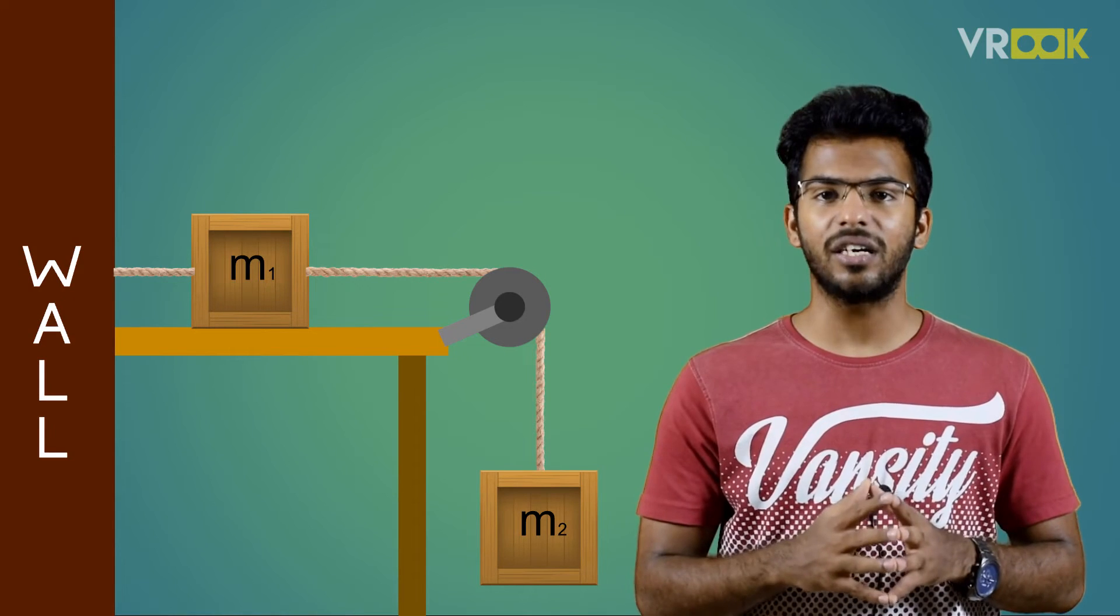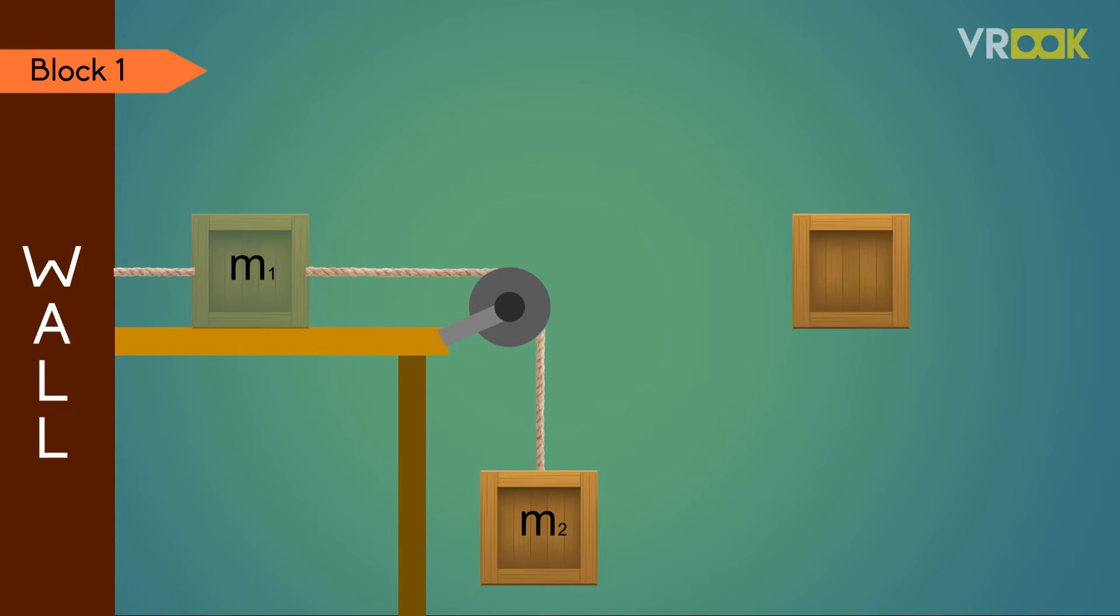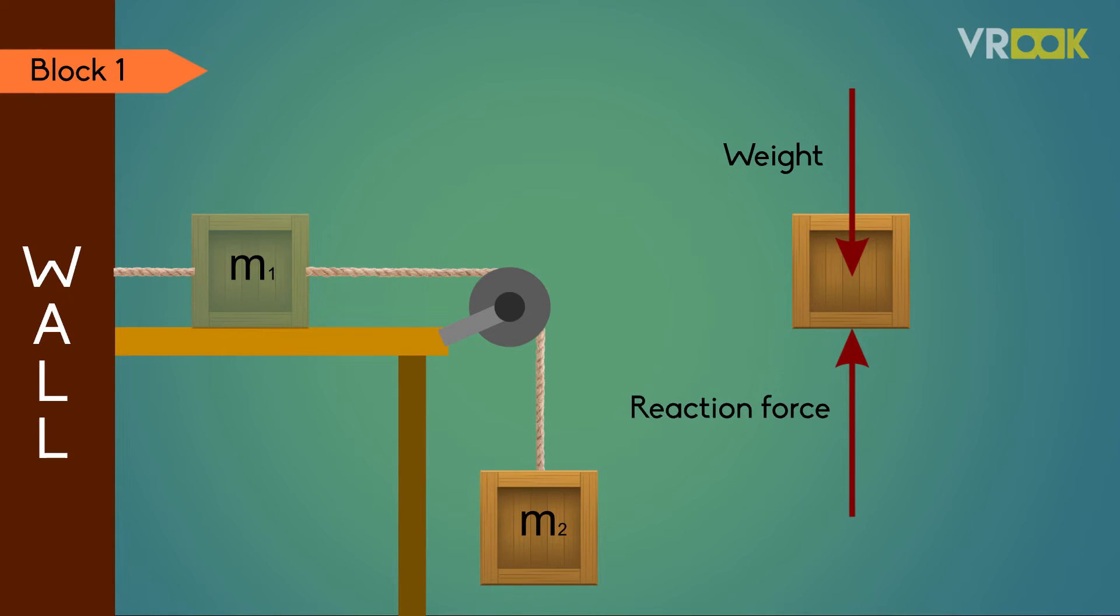Now we start with isolating a body. Let's take block 1. The first force to consider is the weight. It will act downwards. Then the normal reaction force at the point of contact of surface and the block which will act upwards.